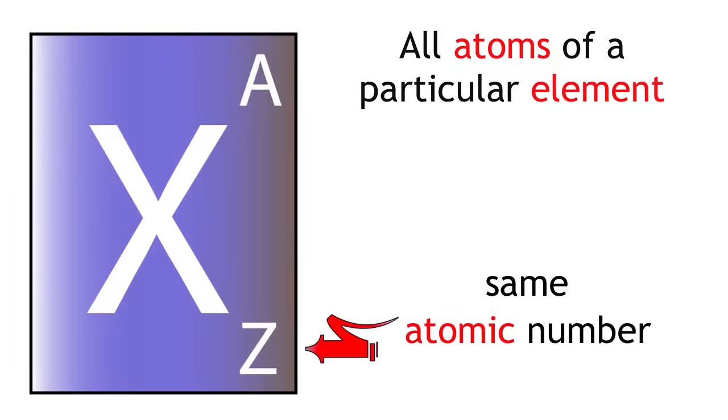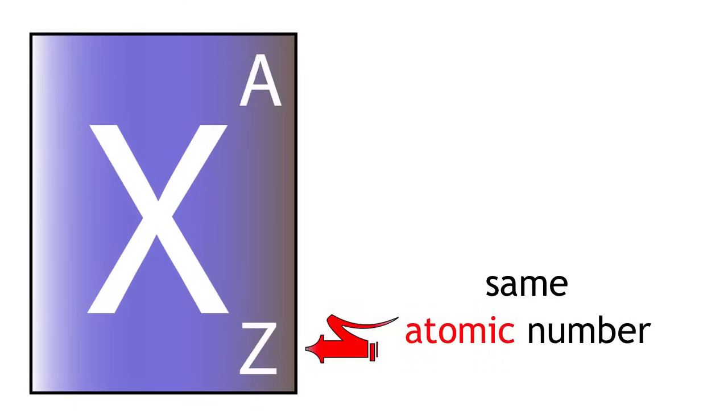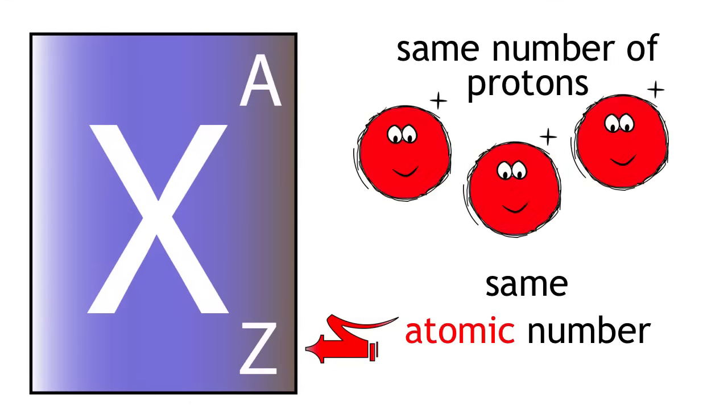All atoms of a particular element have the same atomic number. This means that they all have the same number of protons.